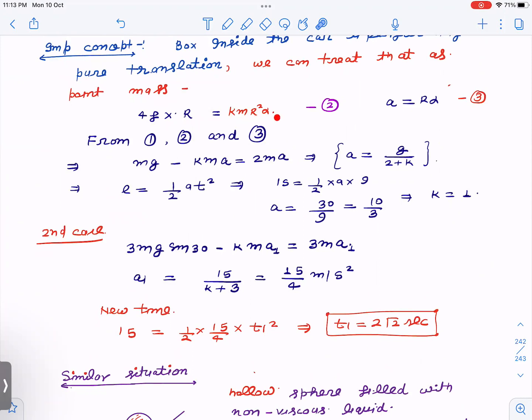So 4f is still equal to kmr squared alpha 1. Alpha will be different of course. So 3mg sin 30 minus - I have used 4f value directly here - kma1 is equal to 3ma1, because this is the force equation. So I've taken 3m now.